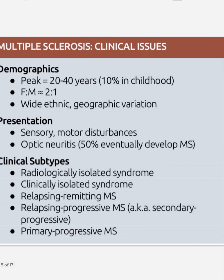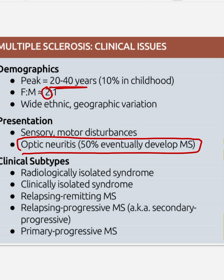Now we will discuss the clinical aspects of multiple sclerosis. Demographically, it is more commonly seen in the 20 to 40 year age group with female predominance. Presentation includes sensory or motor disturbances, and optic neuritis is often the leading or first symptom. Clinical subtypes include radiologically isolated syndrome — where only radiological findings are present with no clinical symptoms.